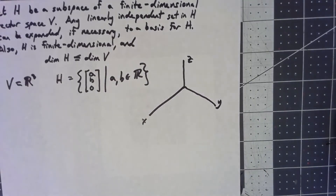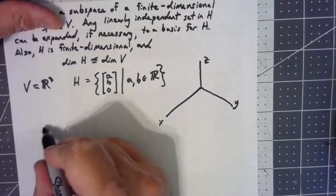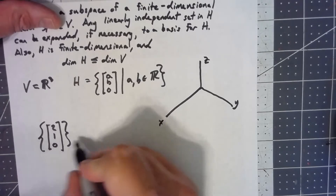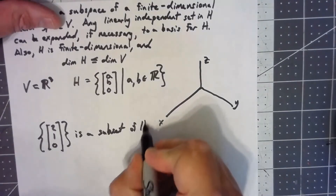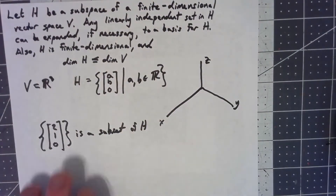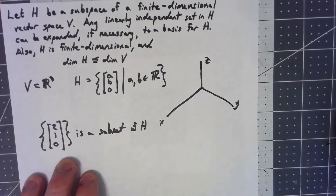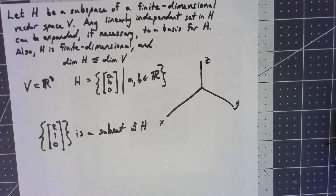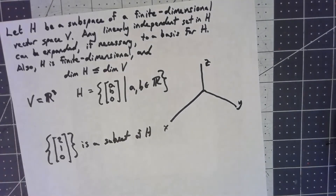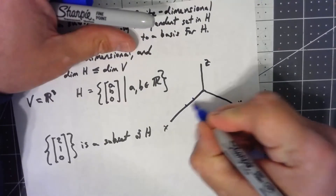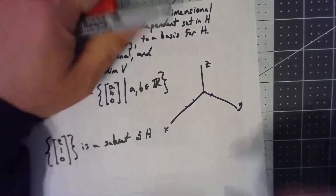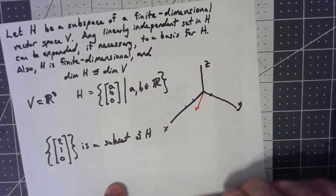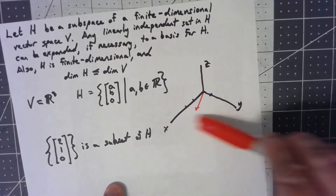Let's take a subset of H. For example, I can take the vector (2, 1, 0). Any subset that isn't just the zero vector, if it only has one vector in it, it is linearly independent. So that is a linearly independent set in H, but it's not a basis for all of H — there are certainly elements in the XY plane that aren't a multiple of this. Thinking geometrically, what we have is a single vector in the XY plane, and the span of that is just a line. I can scale that vector in either direction, but I can't get off that line.